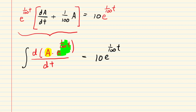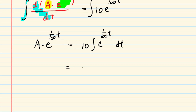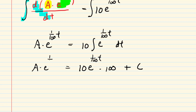We now simply integrate both sides. On the left side, the integration cancels with the derivative, leaving A times e^(t/100). On the right side, we factor out the 10, leaving the integral of e^(t/100) with respect to time. We recopy e^(t/100) and multiply by the reciprocal of one-hundredth, which is 100, then add a constant of integration. Simplifying, 10 times 100 gives us 1,000 times e^(t/100) plus C.